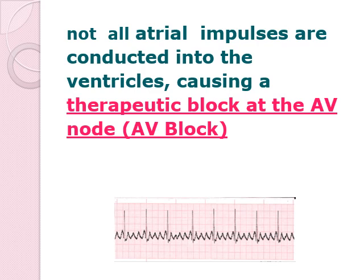If you can notice, in your PAC the P-to-QRS ratio is 1-to-1. But in your atrial flutter, there is one QRS complex for several P-waves. For example, this may be a ratio of 4-to-1 — as you can see, there are 4 P-waves for one QRS complex. That is one characteristic of your atrial flutter.